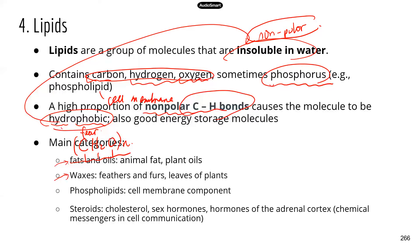Waxes are usually found in both plants and animals — we'll talk about them. Phospholipids are important because they form the backbone of the cell membrane. Steroids — you're probably familiar with some of them, but not others. We'll talk about all of these in detail.